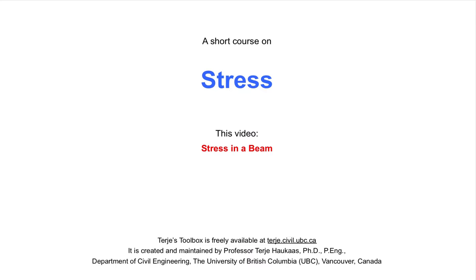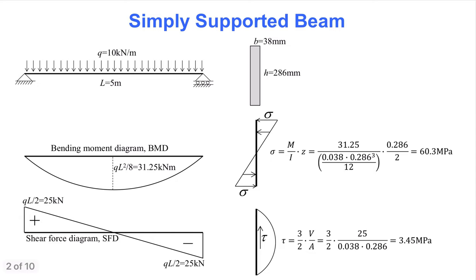The objective in this video is to apply Mohr's circle to study the stress states in a simply supported beam carrying uniformly distributed load. Based on the load and dimensions given in this slide, we calculate a maximum bending moment equal to 31.25 kNm. That gives a maximum axial stress around 60 MPa. The maximum shear force is 25 kN, resulting in a maximum shear stress equal to 3.45 MPa.